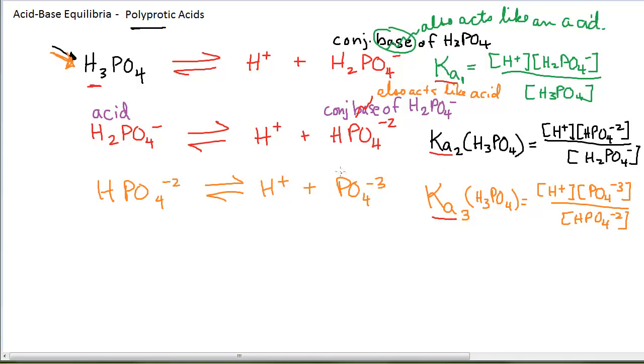In this last step, the PO4-3 is the conjugate base of HPO4-2. It cannot act like an acid, because it does not have a proton to donate. So this is where the series ends. PO4-3 can only be a weak base. It cannot be a weak acid.